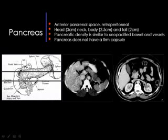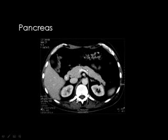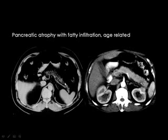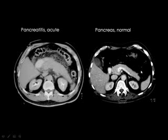The pancreas lies obliquely in the abdomen. Scanning from top to bottom, you first see the pancreatic body and tail, then the head lower down. Sometimes you can see the whole pancreas if it lies horizontally. The splenic vein crosses posterior to the pancreatic tissue. In old age, the pancreas becomes atrophic and infiltrated by fat, but this does not affect pancreatic function — it is a normal appearance, not abnormal. If the pancreas is swollen and the surrounding fat planes are dirty or congested, this is acute pancreatitis.